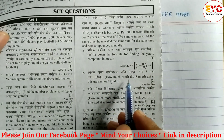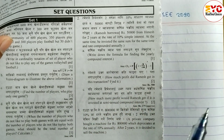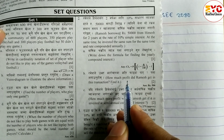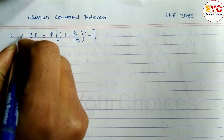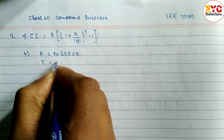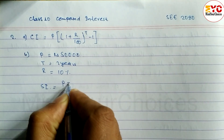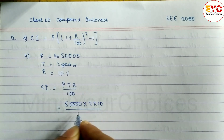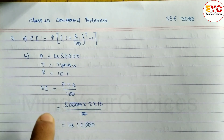Number B: Principle is equal to Rs. 50,000. Time is 2 years. Rate is equal to 10%. So we have to find simple interest using the formula PTR divided by 100. So P value is 50,000, time is 2 years, rate is 10%, divided by 100. We calculate simple interest as Rs. 10,000.